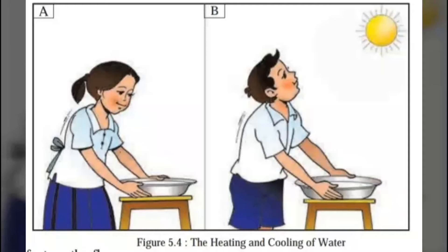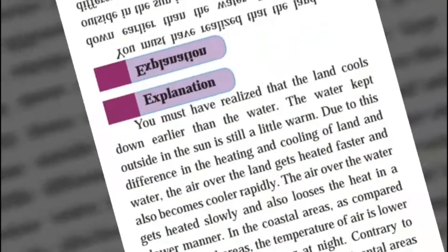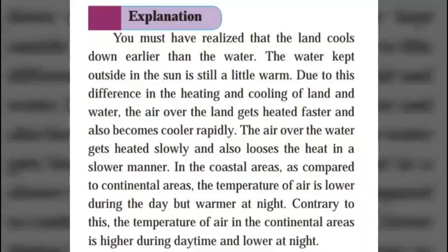Do this again around 7 in the evening. Note your observation again. Now you can remove the pots. During this activity, you must have realized that the land cools down earlier than the water. The water kept outside in the sun is still a little warm. The air over the land gets heated faster and also becomes cooler rapidly. The air over the water gets heated slowly and also loses heat in a slower manner.